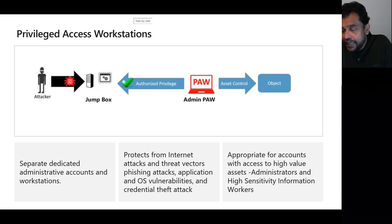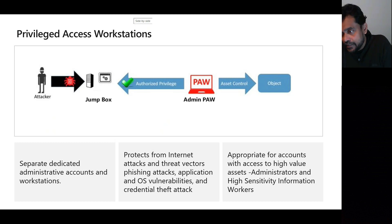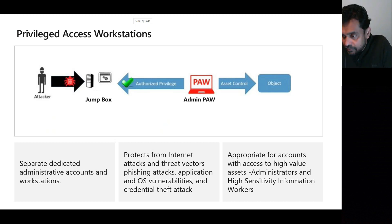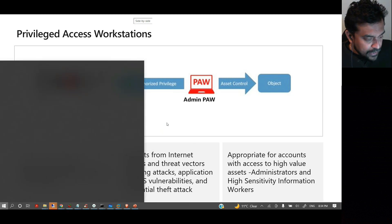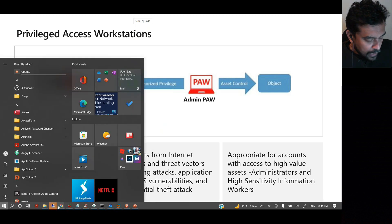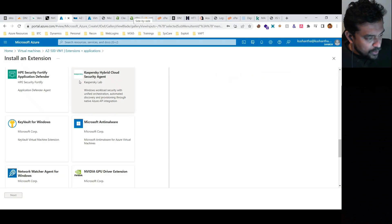We configure a VPN gateway with certificate-based authentication — generating a certificate and installing it on the Privileged Access Workstation, then configuring it on the virtual network gateway. Once the virtual network gateway is configured, you can create a point-to-site VPN connection.